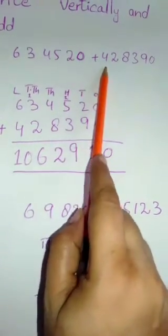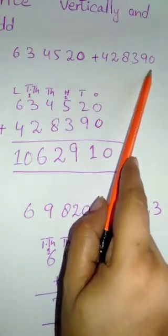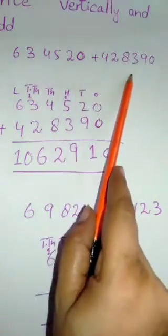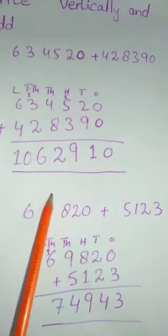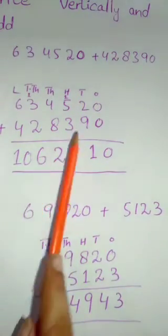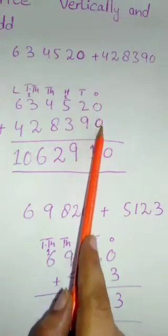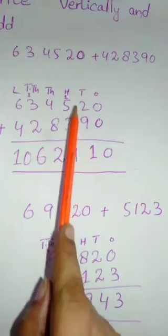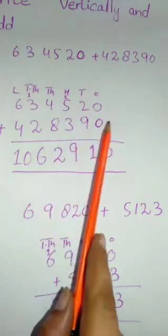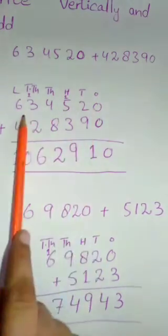Next we have four lakh twenty-eight thousand three hundred and ninety. Both have equal numbers of digits, so you will arrange them according to their place values. The ones digit will be written at the ones place, tens at the tens place, and hundreds at the hundreds place.